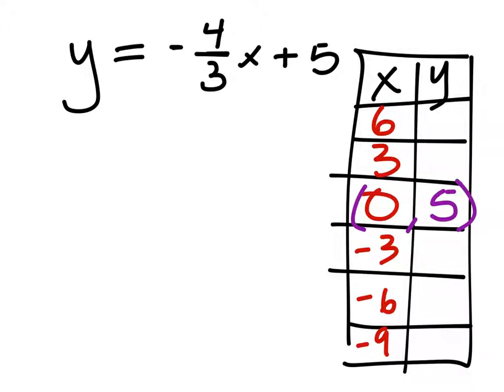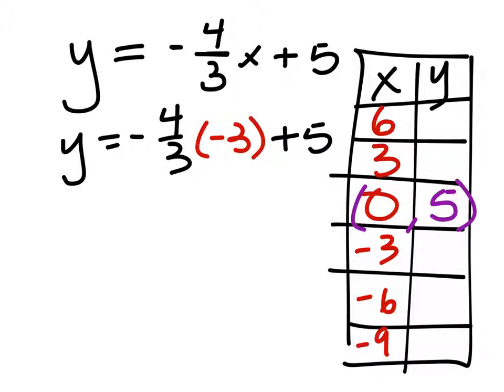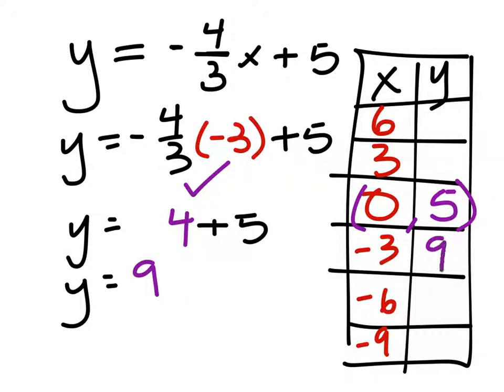When x is 3, so this is what we have, negative 4 thirds times 3 plus 5, and that equals y. So let's multiply these two out. You could put that into a calculator, and it should give you a positive 4 on this thing. So I got 4 plus 5. y equals 4 plus 5. So y ends up equaling a positive 9. That's a pretty nice value to put in there.